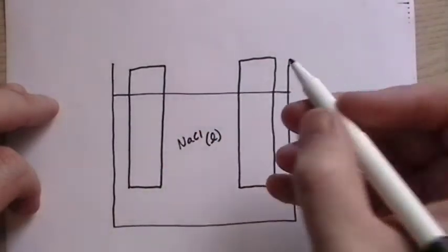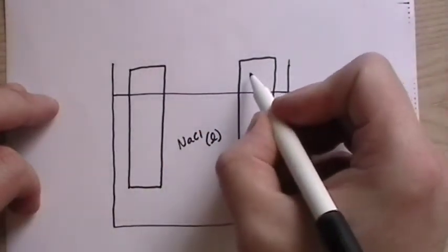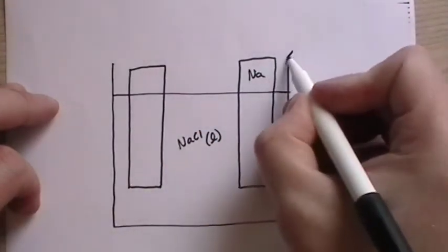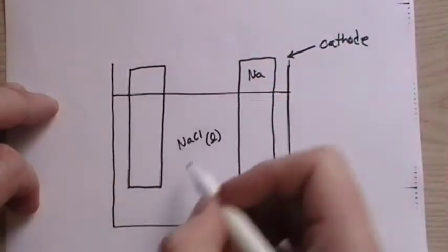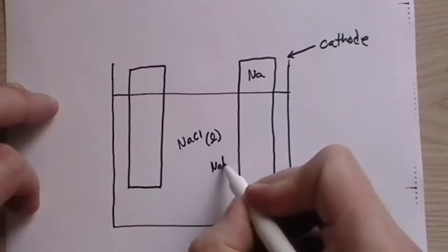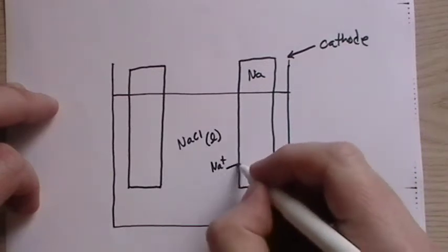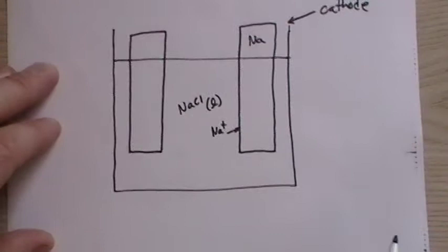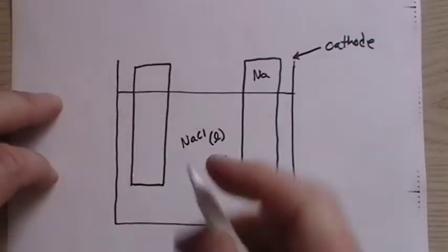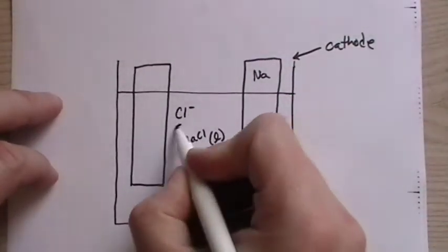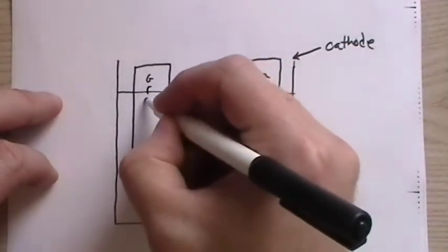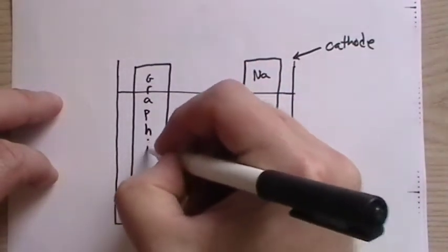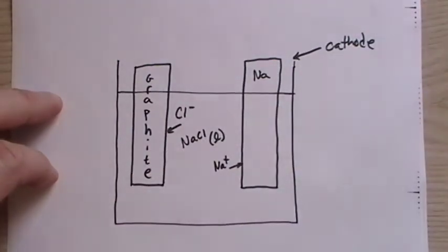And then we have a cathode that is made out of sodium metal. So it's important to note that. And that is where the sodium ion that is in the liquid will make its way to. And then we have the chlorine, the chloride makes their way to a graphite electrode, or the anode.